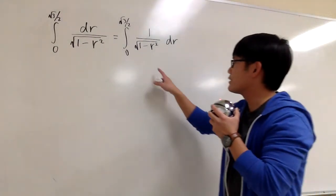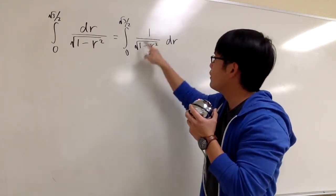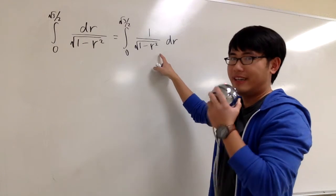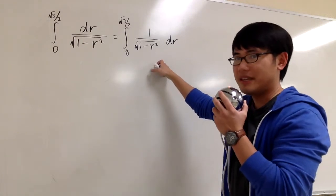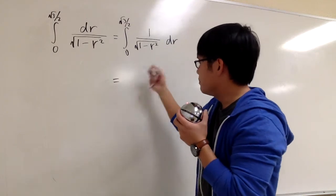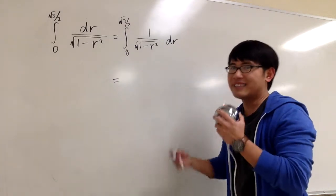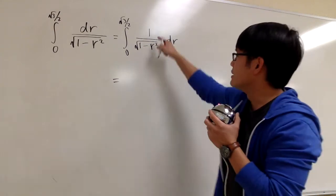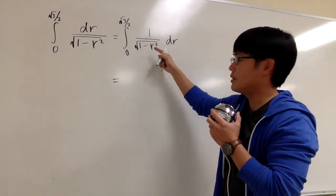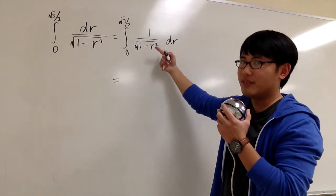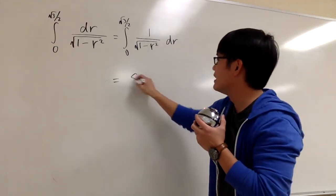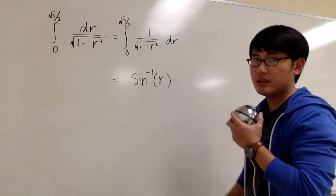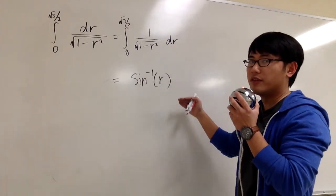And now you have to ask yourself: the derivative of what will give you 1 over square root of 1 minus r squared in the r world? The answer is the inverse sine function. Based on knowing that the derivative of inverse sine is 1 over square root of 1 minus r squared, you know how to do the anti-derivative. So the anti-derivative is the inverse sine function of r.